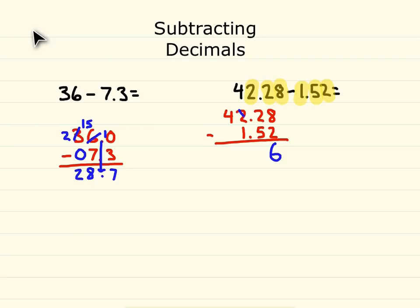So, our 2 ones goes down to 1 one. Now we can give 10 tenths to our 2 tenths making that 12 tenths. So, 12 tenths minus 5 would be 7 tenths. Decimals come straight down. Our 1 one minus 1 one is 0 ones. And our 4 minus 0 tens would be 4 tens. So, we are left with 40 and 76 hundredths.